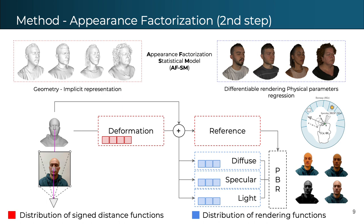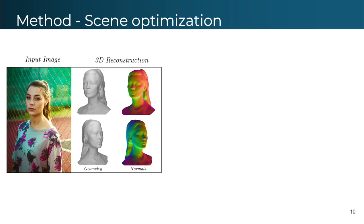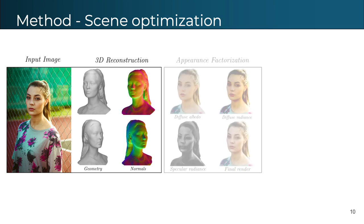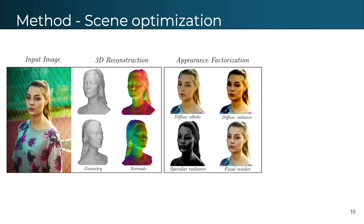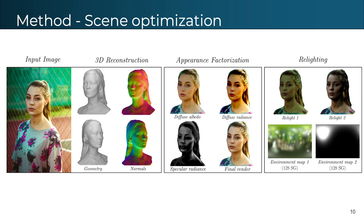To build the appearance factorization statistical model, we replace the rendering network with multiple networks that predict physical parameters. We learn this distribution in an unsupervised manner, as we don't have explicit albedo, specular, or light information in the ground truth. With these two data-driven statistical models as a prior, we show that CIRA can reconstruct full-head avatars with decomposed intrinsic properties, and render under new illumination conditions from a single input image.